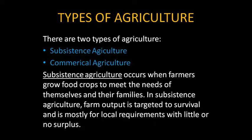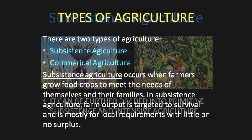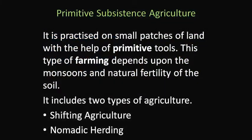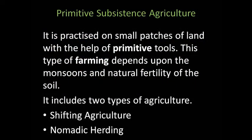Subsistence agriculture can be further divided into primitive subsistence agriculture and intensive subsistence agriculture. Primitive subsistence agriculture is practiced on small patches of land with the help of primitive tools. This type of farming depends upon the monsoons and natural fertility of the soil. It includes two types: shifting agriculture and nomadic herding.